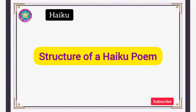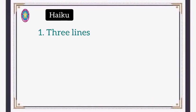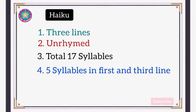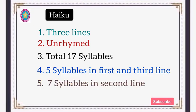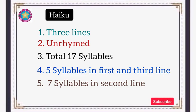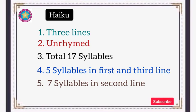The structure of a Haiku poem: a Haiku poem consists of only three lines. These three lines are unrhymed. The total number of syllables in these three lines is 17 — five syllables in the first line, seven syllables in the second line, and five syllables again in the third line.